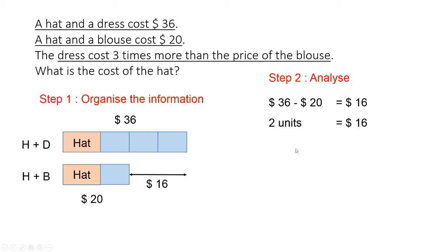So next, if two units is $16, to find one unit, we simply take 16 divide by 2, and we get $8.